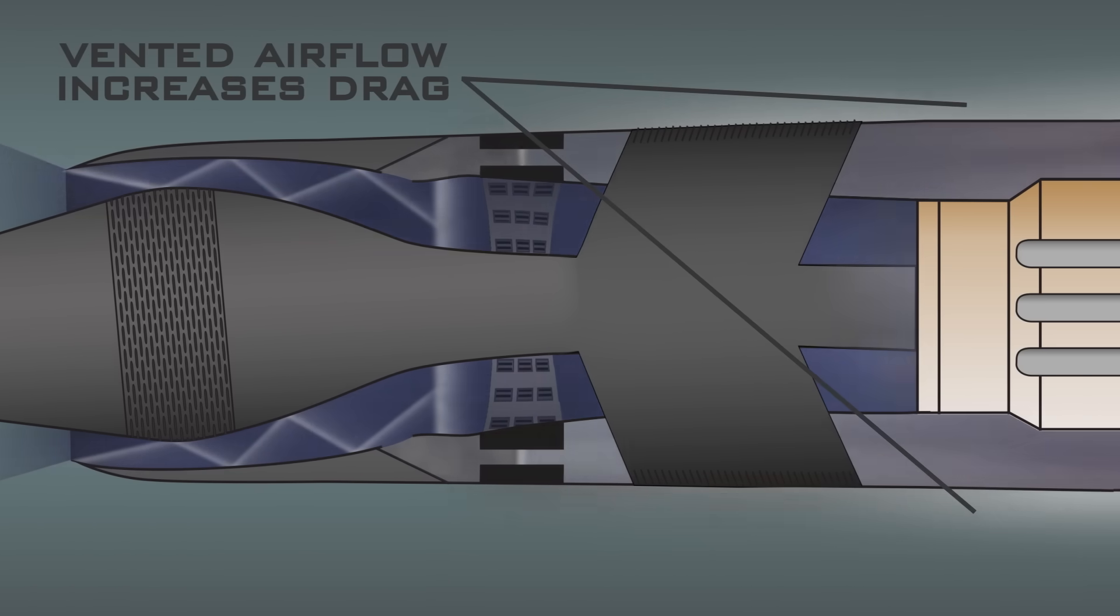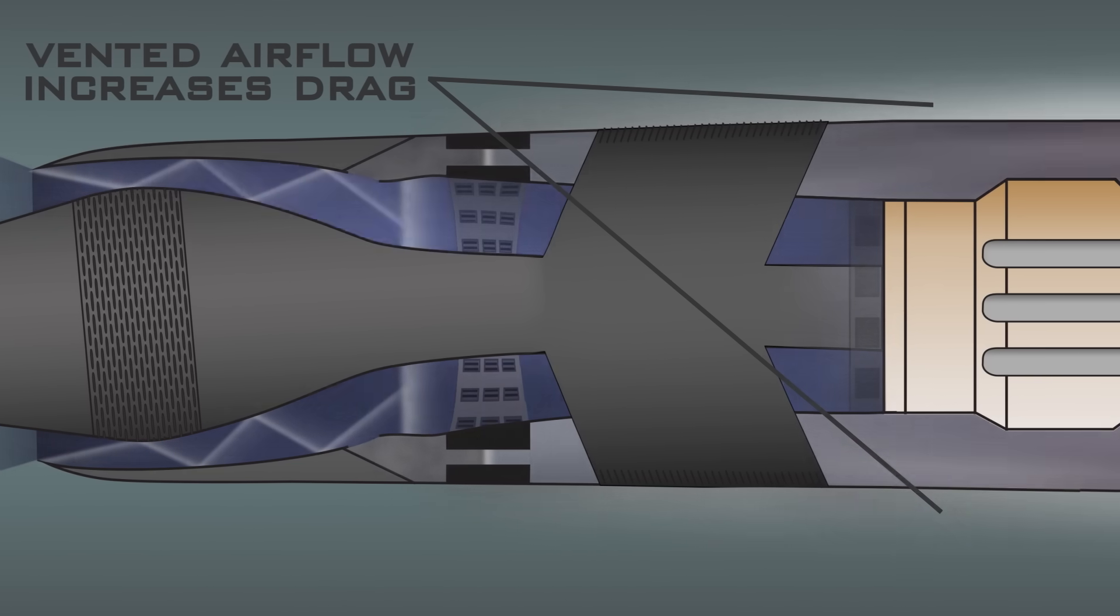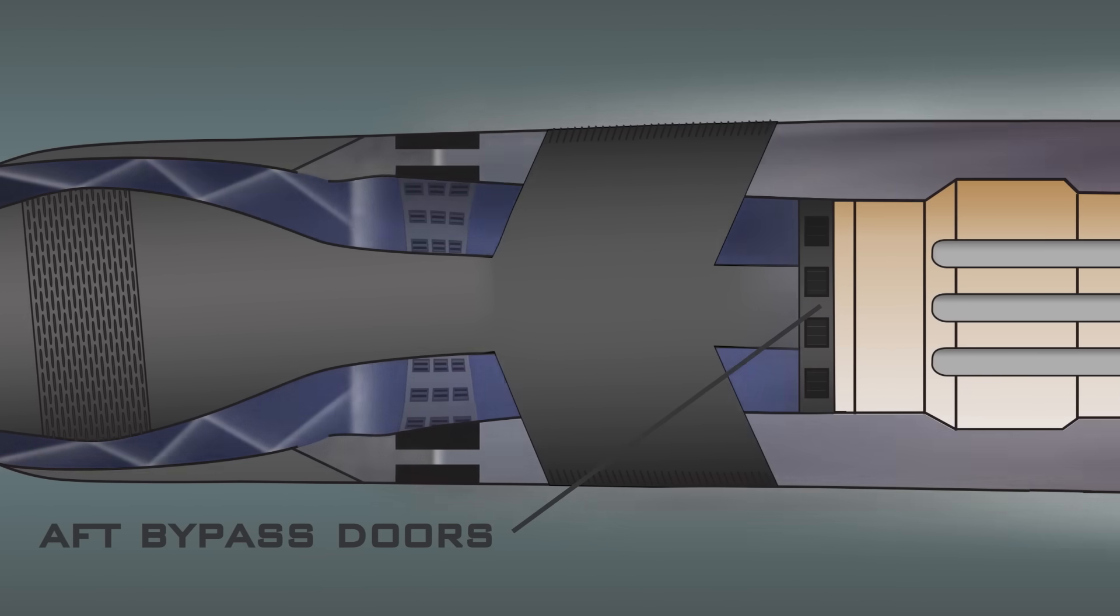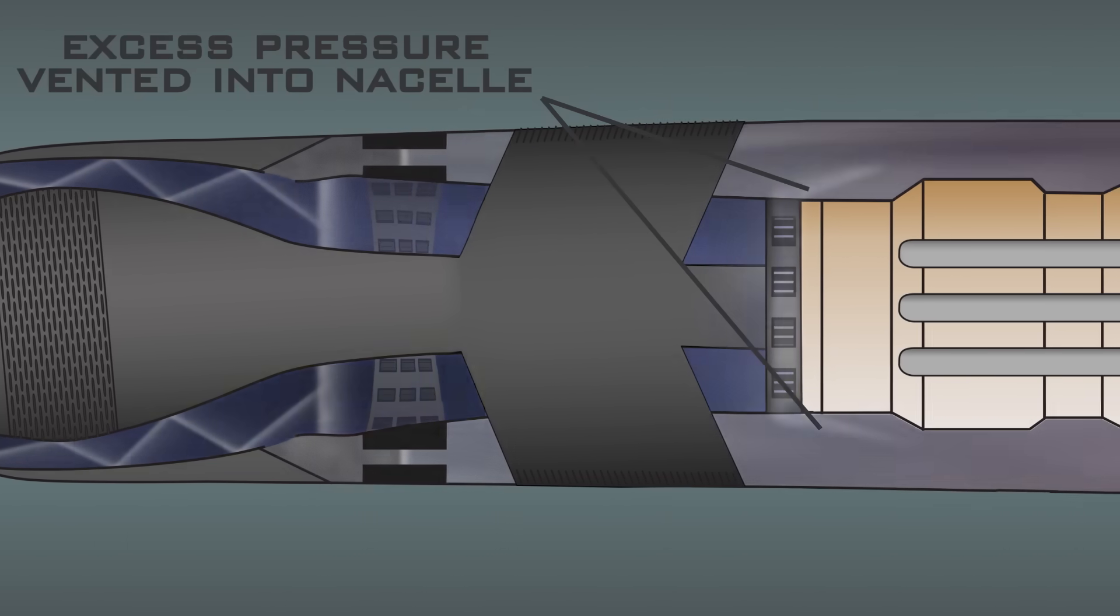But if the pilot wants to reduce drag during acceleration or provide additional cooling to the engine, he or she can open the aft bypass doors, which route the additional pressure through the nacelle and out the ejector.